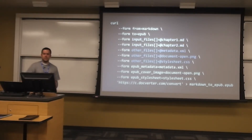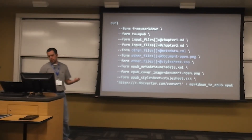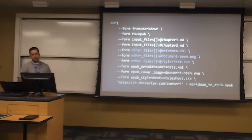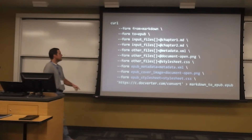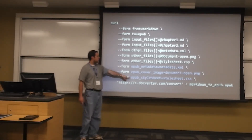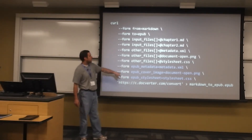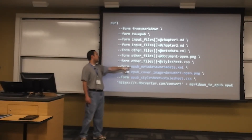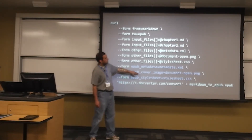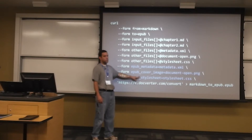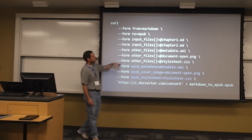Other files you'll upload include any images, your style sheet, and the metadata XML file for author and copyright information. For generating an EPUB specifically, you specify the metadata file, the cover image, and the style sheet you want to use to format the book.